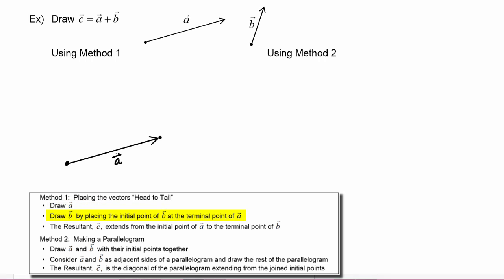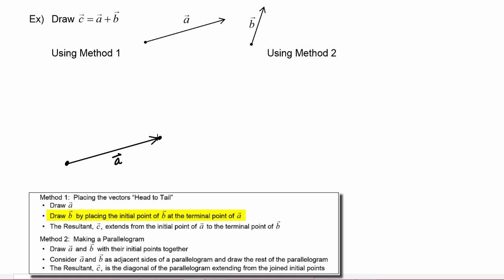The second step says we draw vector B by placing the initial point of vector B at the terminal point of vector A. So here's vector B — we lift it up and place it at the terminal point of vector A. There's vector B, and here's its terminal point.